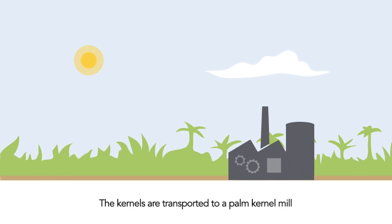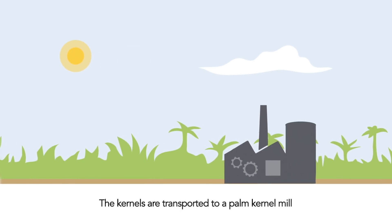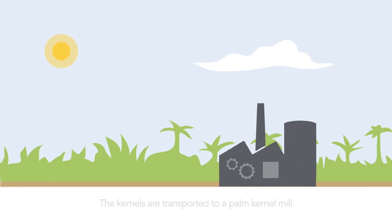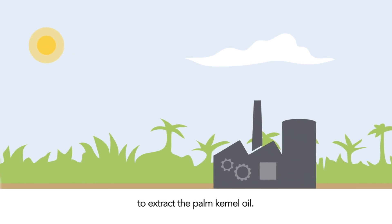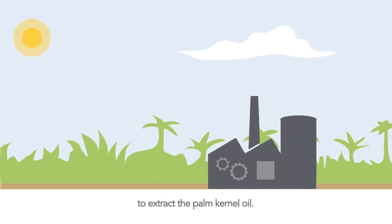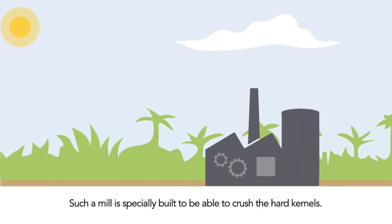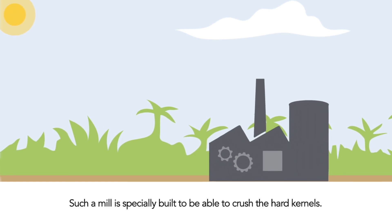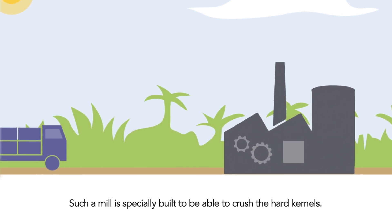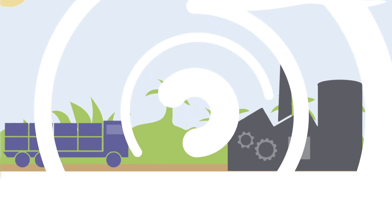The kernels are transported to a palm kernel mill to extract the palm kernel oil. Such a mill is specially built to be able to crush the hard kernels.